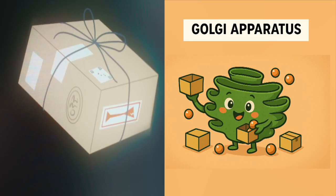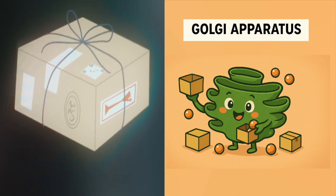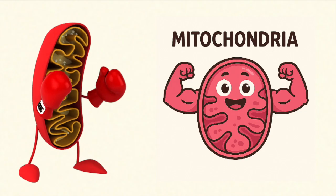Next the Golgi apparatus, sort pack and ship. The lipids and the proteins, send them out on a trip. Now the mitochondria, the powerhouse on the beat. It keeps the cell moving, generates the ATP.